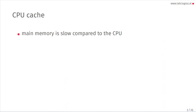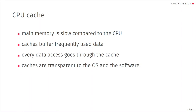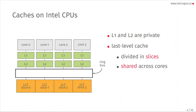I will be talking about CPU caches. The idea is that we have main memory that is really slow compared to the CPU, so we have caches that store frequently used data, and every data access goes to the cache. Caches are transparent to the operating system and software. On Intel CPUs, you have a hierarchy of different levels with usually three levels of caches. Level 1 and level 2 are private to each core, but the last level cache is divided into slices — as many slices as cores — and all slices are shared across cores. This last level cache is inclusive, meaning everything in level 1 and level 2 will also be in the last level cache.